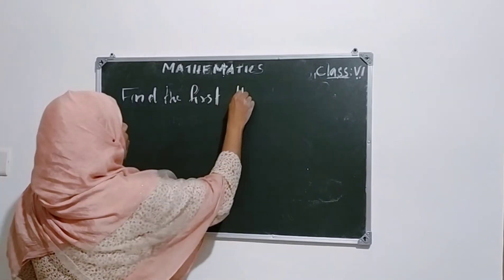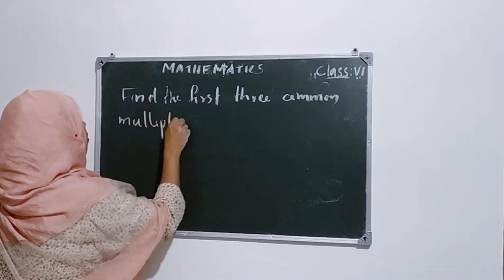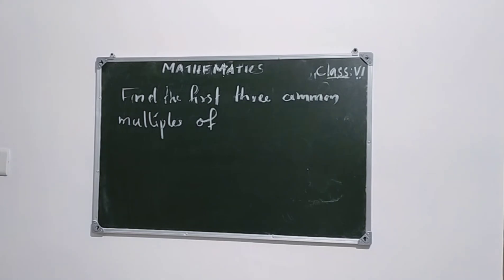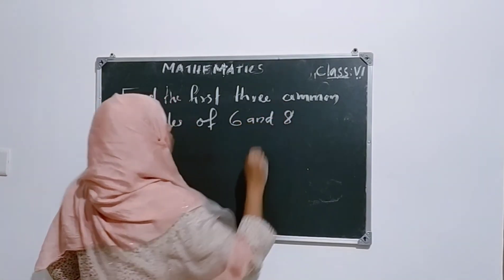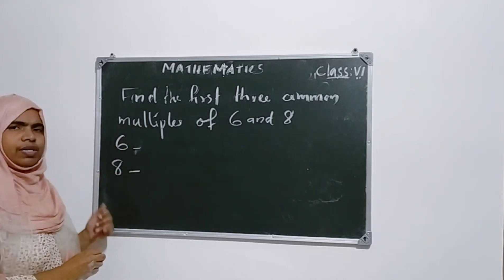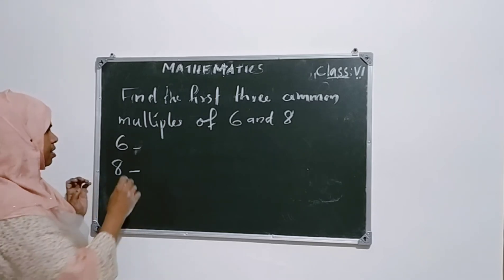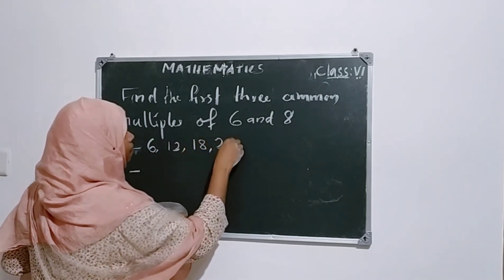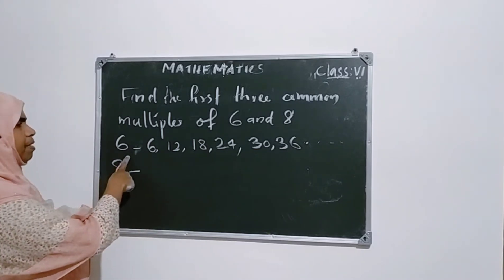Find the first 3 common multiples of 6 and 8. What is a multiple? A multiple means the number multiplied by 1, 2, 3, 4, etc. So multiples of 6: 6, 12, 18, 24, 30, 36, etc. This is multiples of 6.